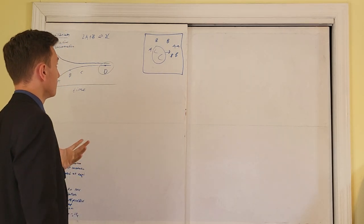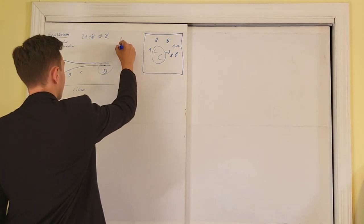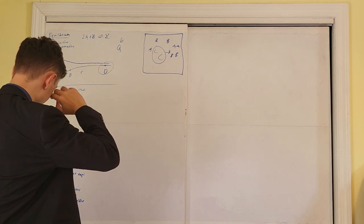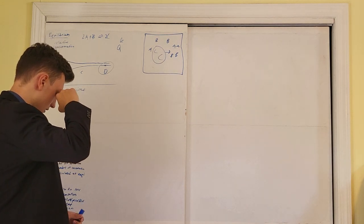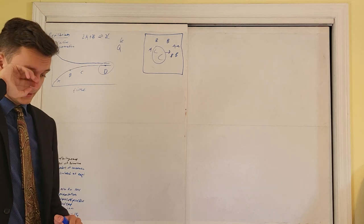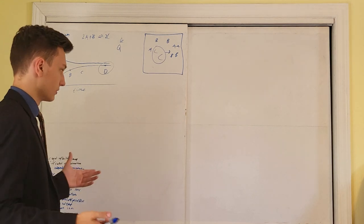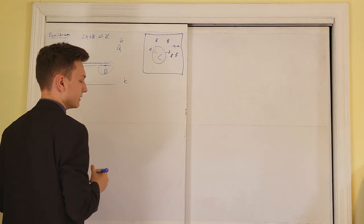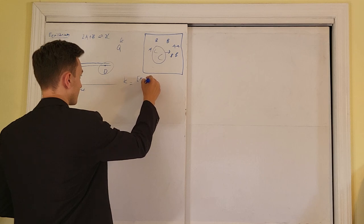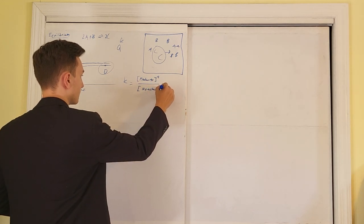We have a way to model equilibrium with Q and K. Q is called the reaction quotient, and K is the equilibrium constant. They each have their own equation, which are the same exact equation. The equation for the equilibrium constant K is the concentration of products over the concentration of reactants, each raised to their respective exponents — because the coefficients in the balanced equation become the exponents.